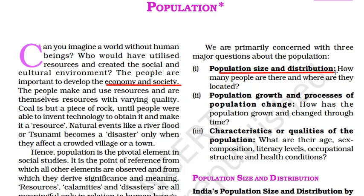The second point is population growth and the process of population change — whether it is increasing or decreasing. The third important point is the characteristics or qualities of the population: what is the age, what is the sex composition — male or female — what are literacy rates, how many people are educated, what kind of education they have, what is the occupational structure, and what are the health conditions of the people. We try to know all of this in a census for further study of a place.